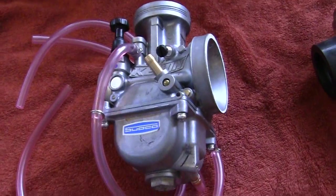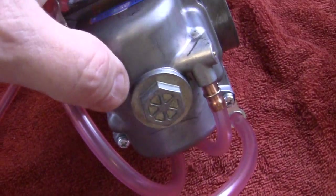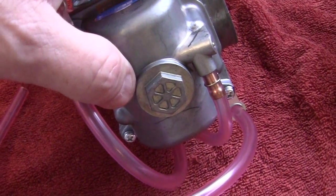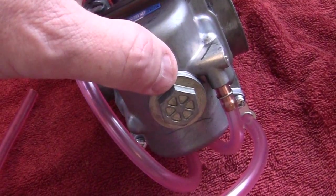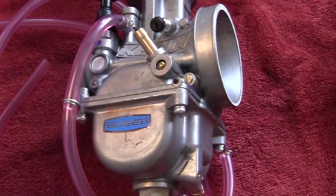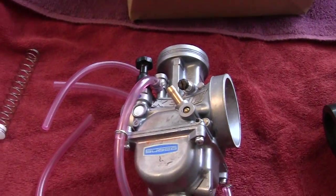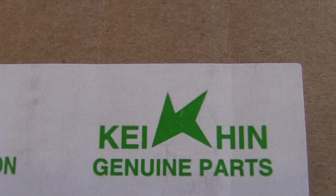Another thing that fakers don't do yet is they don't use Keihin jets. If you take this float bowl cover off and you unscrew the jet, the main jet, the main jet will have a number on it.